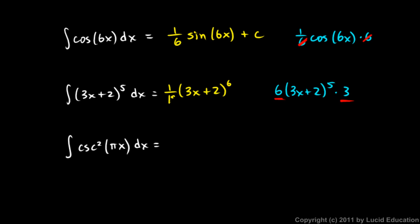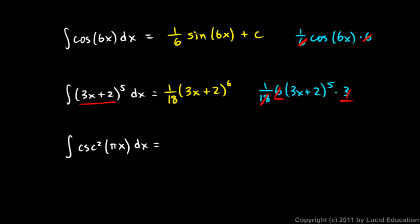So we put in a factor of 1/18. If we differentiate (1/18)(3x + 2)⁶, that factor of 18 cancels out, and the derivative is (3x + 2)⁵. So the integral of (3x + 2)⁵ is (1/18)(3x + 2)⁶ + c.